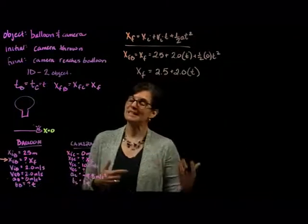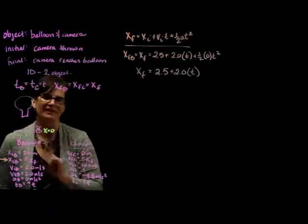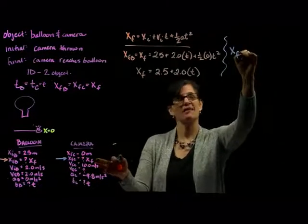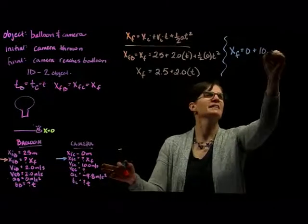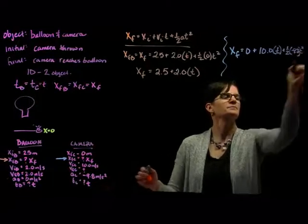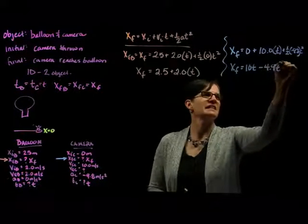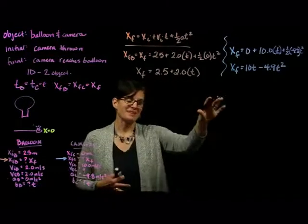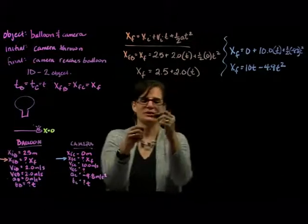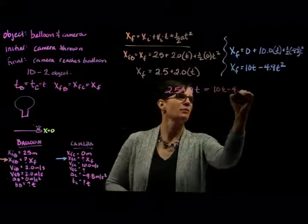Is x_f related to anything else? Is t related to anything else? Yes — the camera. Now we go after x-final of the camera using the same relationship: x_f = 0 + 10t + one-half times negative 9.8 times t-squared. Simplifying: x_f = 10t − 4.9t². I can't solve for either variable using just that equation, but now I recognize these are the same x_f — the same position. So I can set the two equations equal: 2.5 + 2t = 10t − 4.9t².